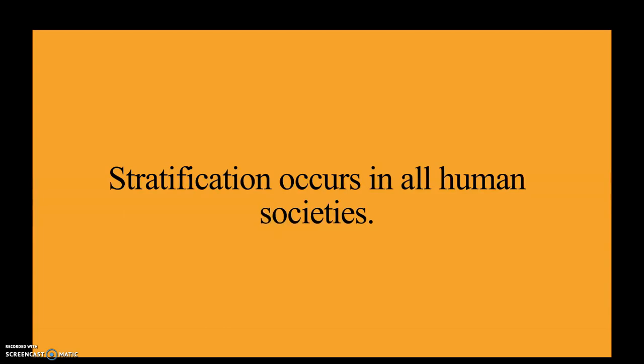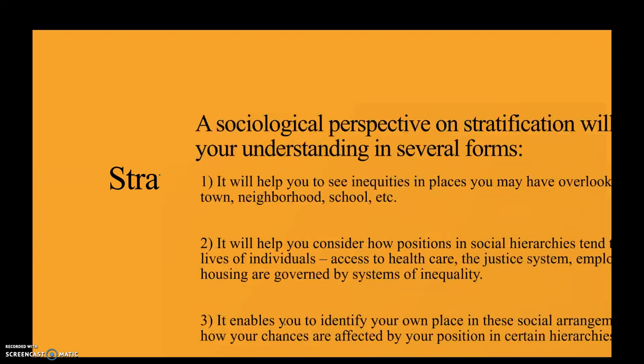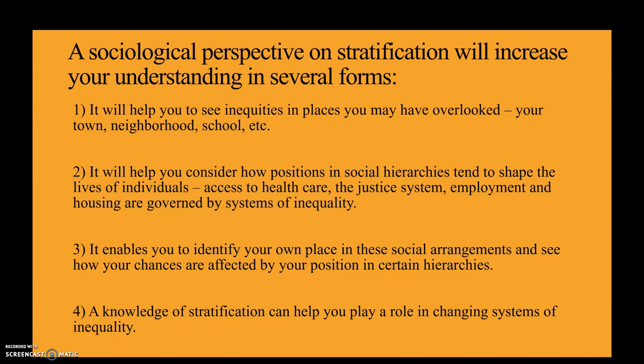Stratification occurs in all human societies. There are some societies that may see Christianity at the bottom and Islam at the top, or think about matriarchal societies — they might have men at the bottom and women on top. They all have different arrangements depending on what society we're discussing. This chapter really helps you understand inequalities in places you might have not seen before, perhaps never really considered how social class may impact somebody's life experience.